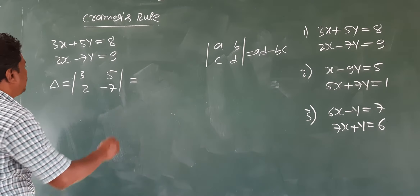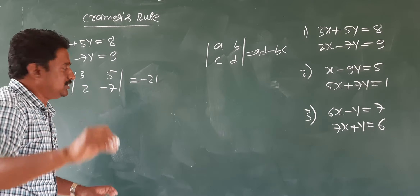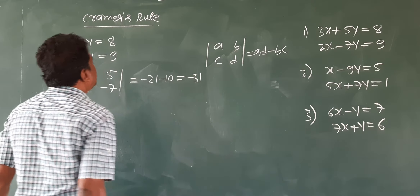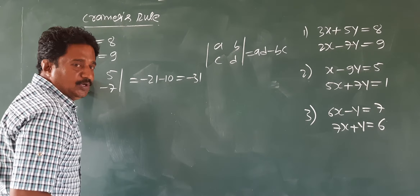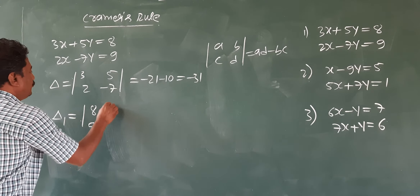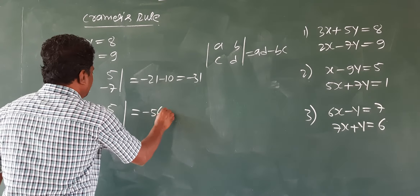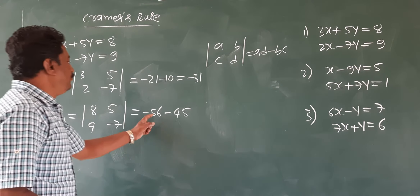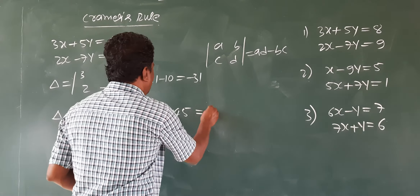So: 3 times minus 7 is minus 21, minus product of the other two: 5 times 2 is 10. So delta equals minus 21 minus 10 equals minus 31. Next, delta 1: you replace the first column by the constants 8 and 9. So delta 1 is the determinant with 8, 9 in the first column and 5, minus 7 in the second. Expanding: 8 times minus 7 is minus 56, minus 9 times 5 is 45. So minus 56 minus 45 gives minus 101.